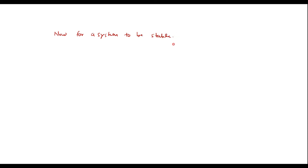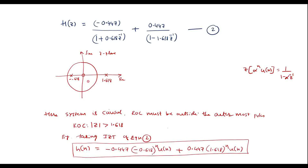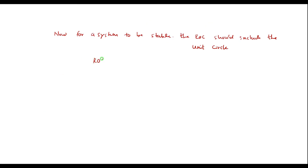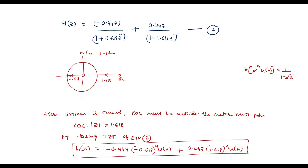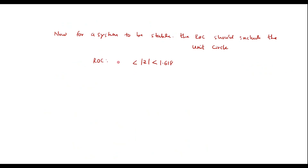Now we check stability. For a system to be stable, the ROC should include the unit circle. In other words, all poles must be inside the unit circle. Here one pole at z = 1.618 is outside the unit circle, so the system is not stable. To obtain a stable system, we choose the ROC as 0.618 < |z| < 1.618, which includes the unit circle.